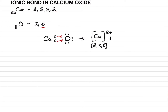Put a plus sign, then make a square bracket and put oxygen inside. Close the bracket and write 2−. Why 2−? Because oxygen has taken two electrons, and now its electronic configuration becomes 2 and 8. And hence we have CaO.